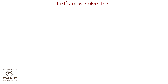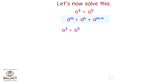Let's now solve a cube divided by a raised to 5. First, we solve this using the law of exponents: a raised to m divided by a raised to n is equal to a raised to m minus n. That is, a cube divided by a raised to 5 is equal to a raised to 3 minus 5, which is equal to a raised to minus 2.